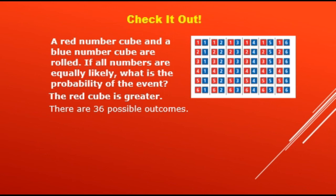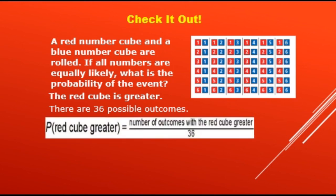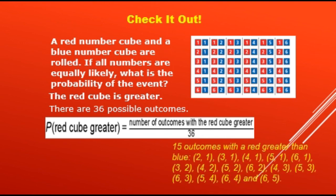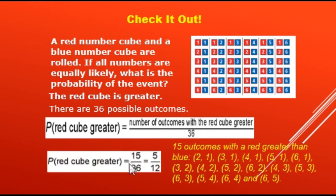Next: a red number cube and a blue number cube are rolled. If all numbers are equally likely, what is the probability that the red cube is greater? There are 36 possible outcomes. P(red cube greater) = number of outcomes where red is greater over 36. There are 15 outcomes where red is greater than blue. So P(red cube greater) = 15 over 36, which reduces to 5 over 12.